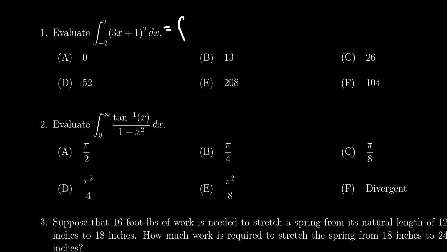This one, I would probably just suggest that we foil out the 3x plus one squared there. You're going to get 3x times 3x, which is 9x squared. Then you're going to get a 3x times 1 and then another 3x times 1, so that gives you a 6x. And then 1 times 1, which is 1.